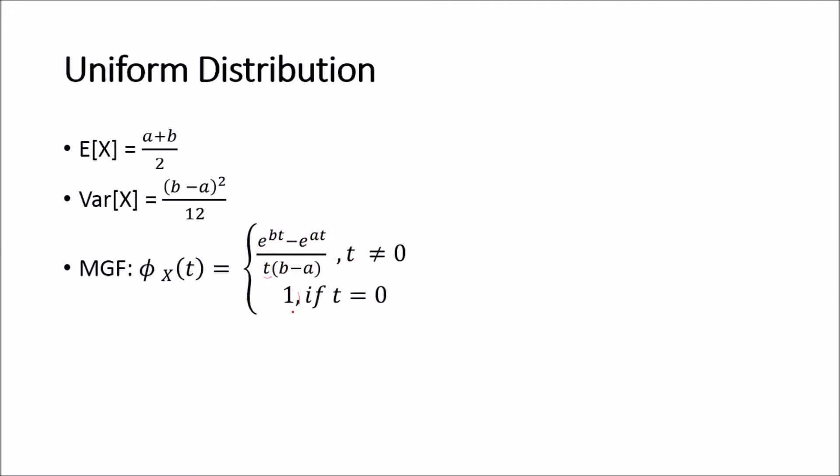So those are the properties of the uniform distribution as well as its expected value, its variance, and its moment generating function. In the next slide, we will cover an example of a question that you might encounter if you're dealing with the uniform distribution.